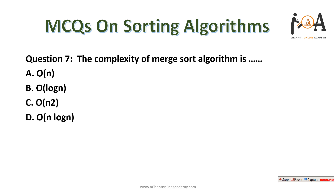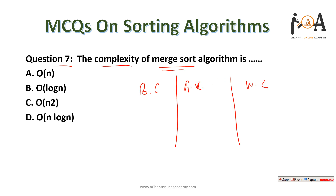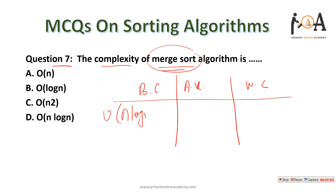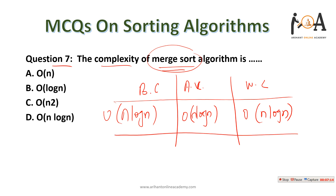Question number seven: what is the complexity of the merge sort algorithm? Merge sort best case complexity is O(n log n), average case is also O(n log n), and worst case is also O(n log n). The answer remains the same regardless of the case, so option D — O(n log n) — is the correct answer.